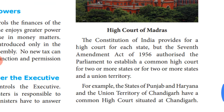The Constitution of India provides for a High Court in each state. Originally, one state had one High Court. In the 7th Amendment, Article 231, in 1956, Parliament was authorized to establish a Common High Court for two or more states.